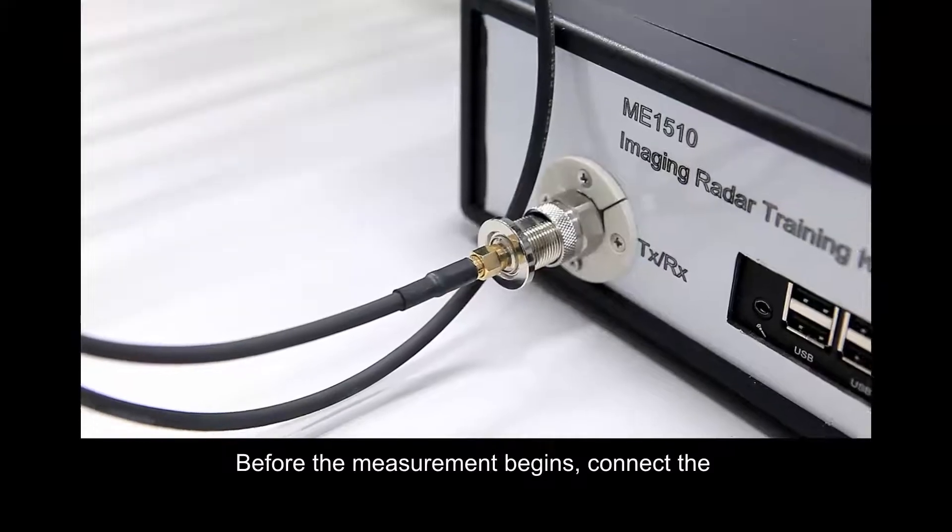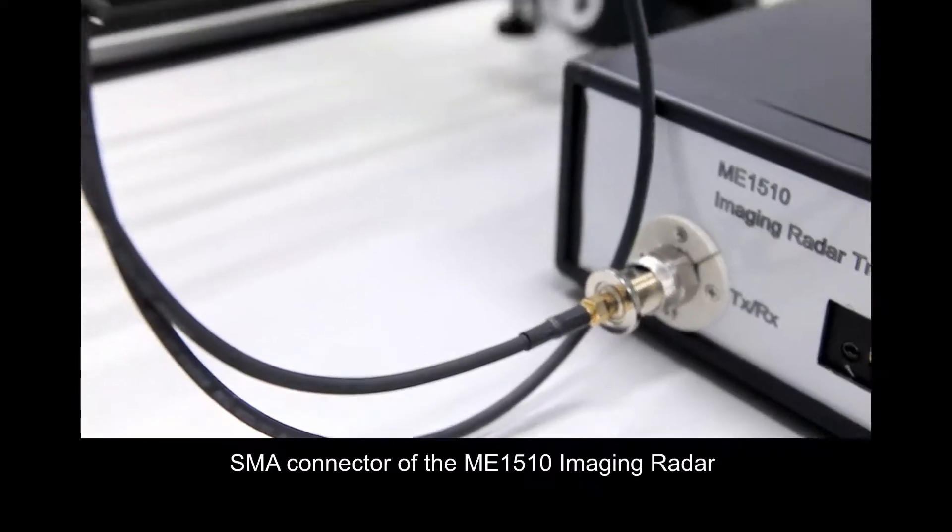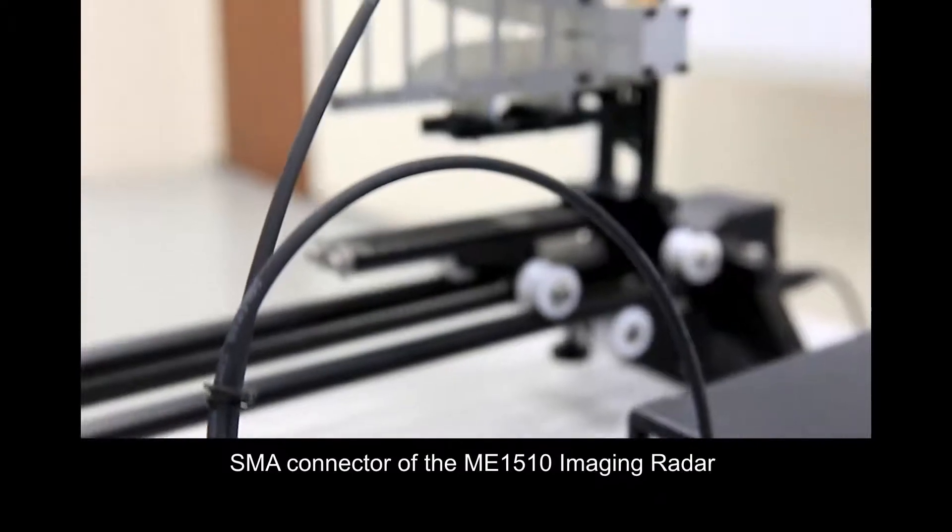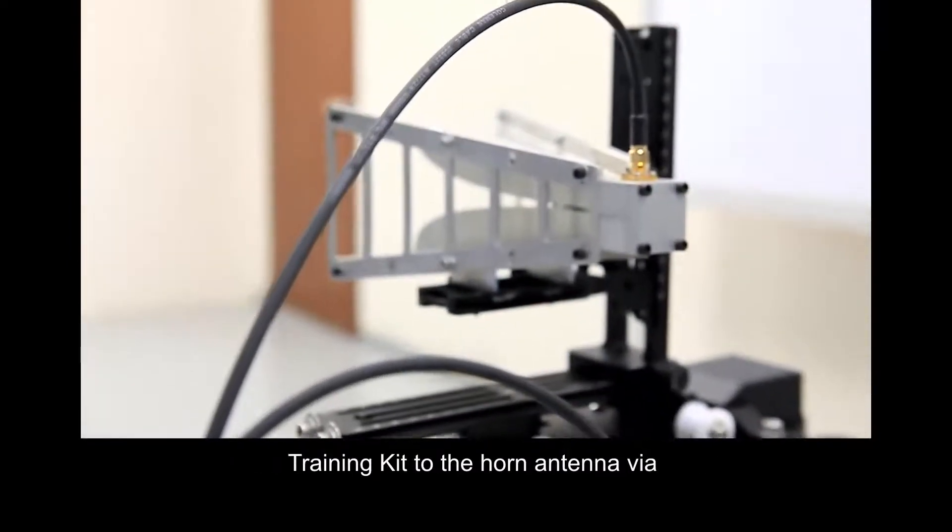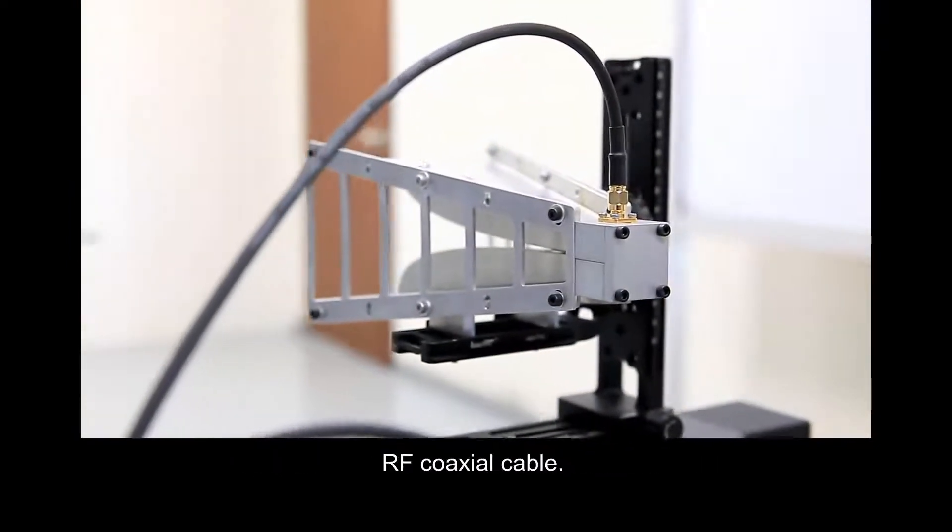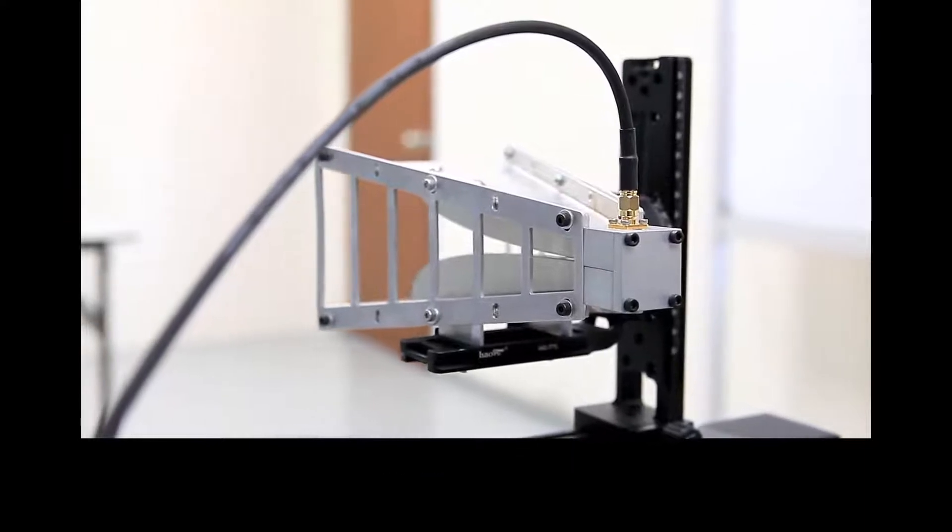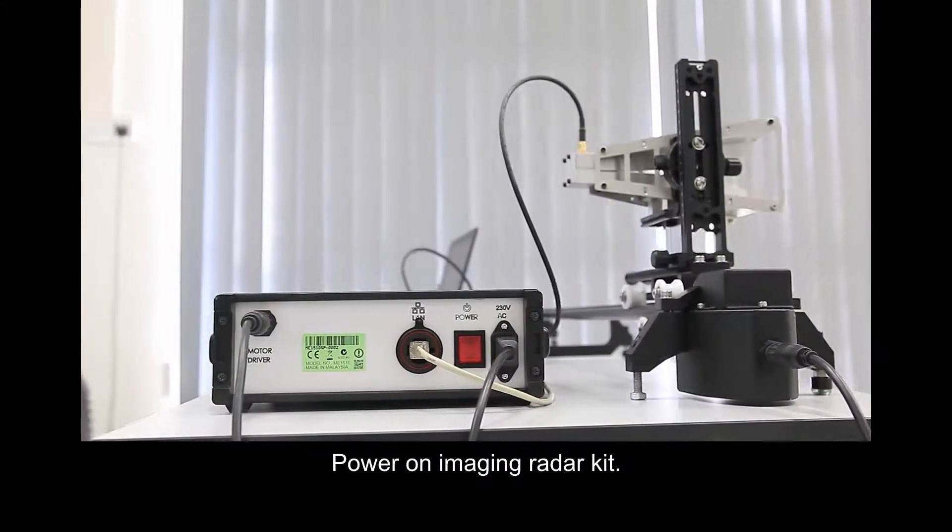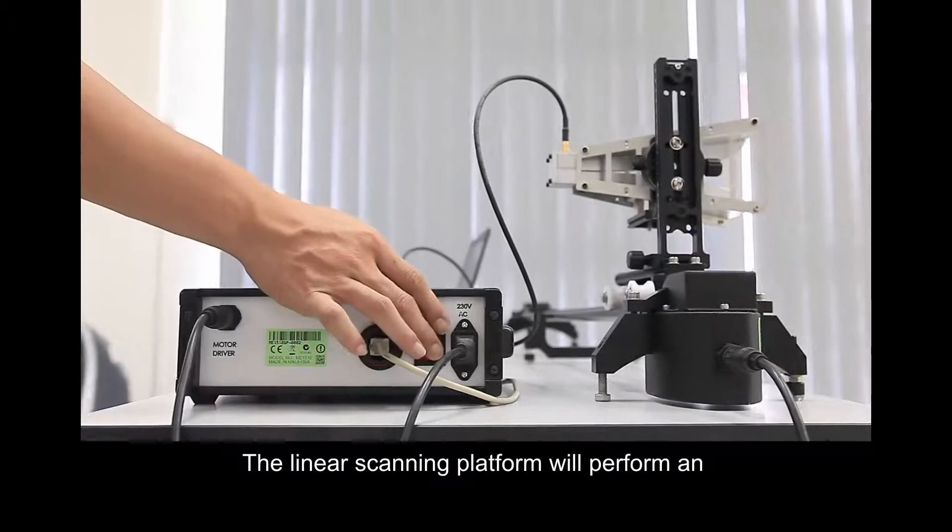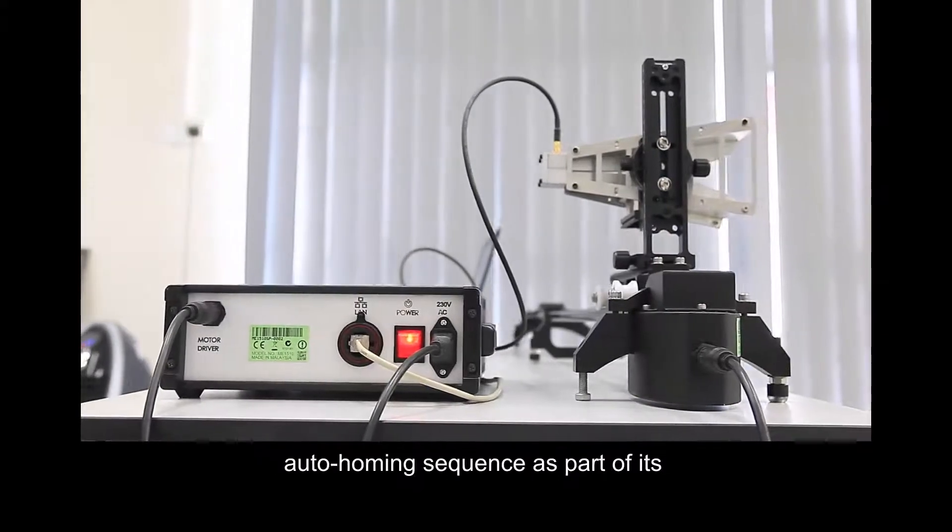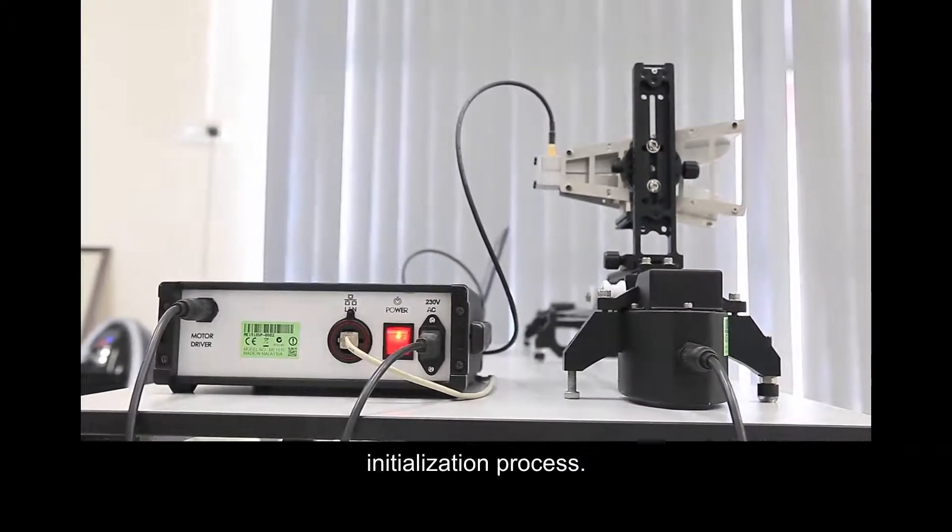Before the measurement begins, connect the SMA connector of the ME1510 imaging radar training kit to the horn antenna via RF coaxial cable. Power on the imaging radar kit. The linear scanning platform will perform an auto-homing sequence as part of its initialization process.